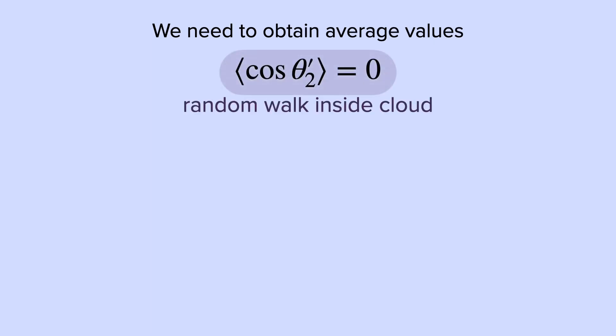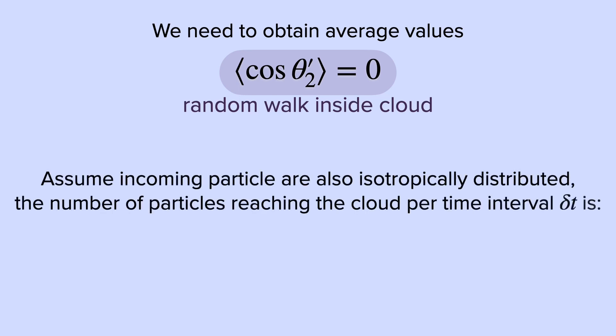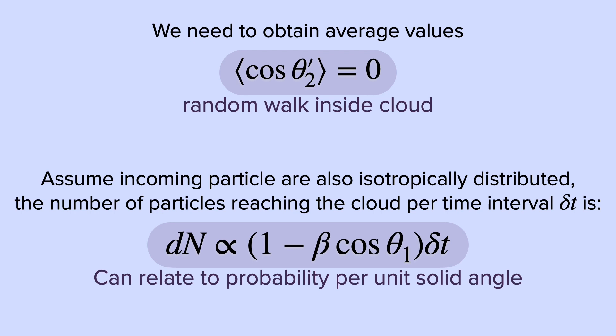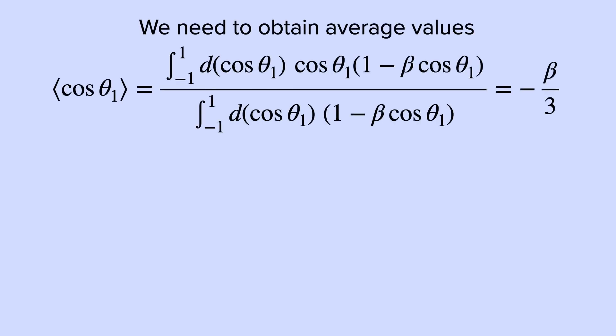And thus, we can write a fractional change in energy in the lab frame as such. However, this is for a particular direction. We need to average over all values. If we consider a random walk inside the cloud, so that each outgoing direction is equally likely, then, assuming incoming particles are also isotropically distributed, we can compute the number of particles reaching the cloud per interval dt. This can be related to the probability per unit angle. Then, we obtain the average values, and thus, we get an equation for the averaged fractional energy change.